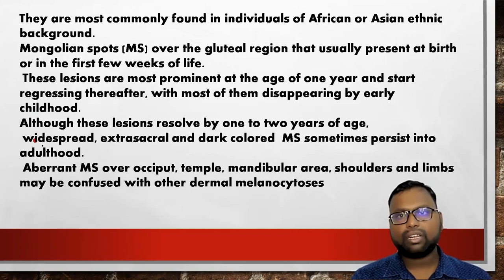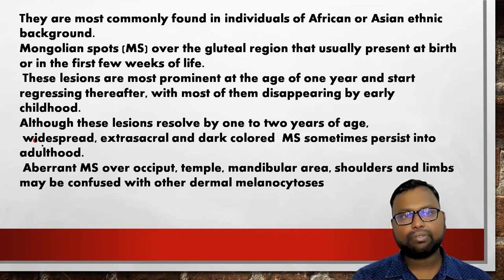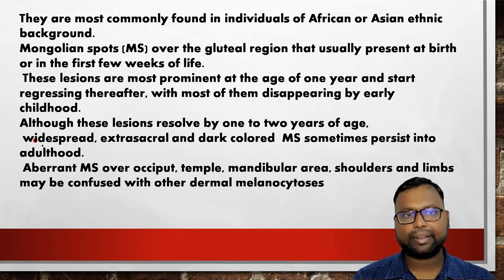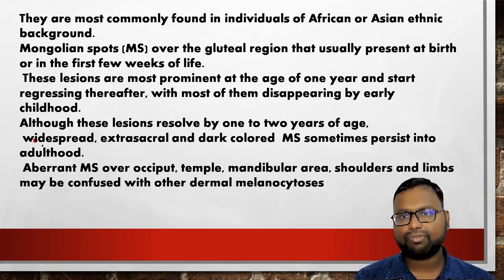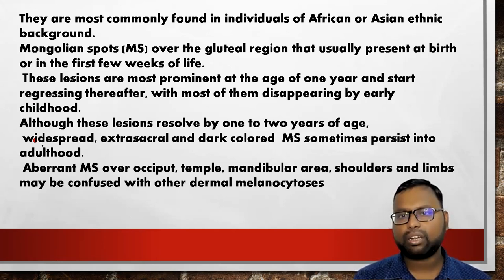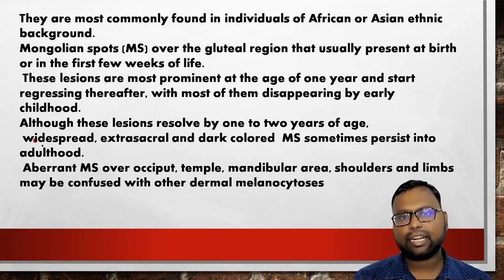Mongolian spots are mostly found in African or Asian ethnic backgrounds. They are usually present at the gluteal region and appear at birth or during the first week of life. These lesions are most prominent at the age of one year and start regressing thereafter, with most disappearing by early childhood. Although these lesions usually resolve by one to two years of age, if widespread, extra-sacral, and dark in color, they sometimes persist into adulthood.